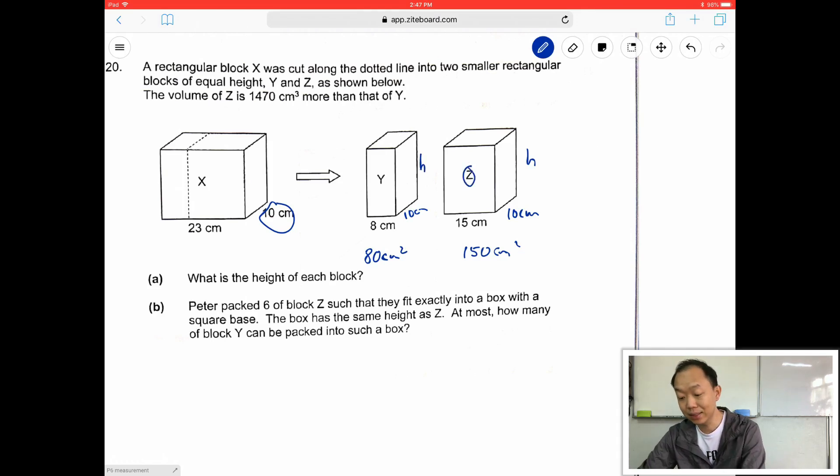So I want to find the height. I got the base area now. Let's find what is the volume of Z. Volume of Z is equals to 150 times h, and the volume of Y is equals to 80 times h.